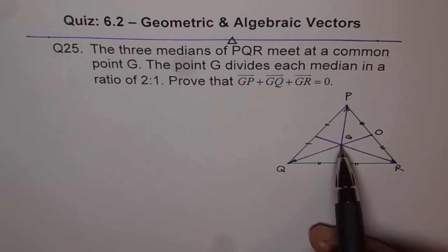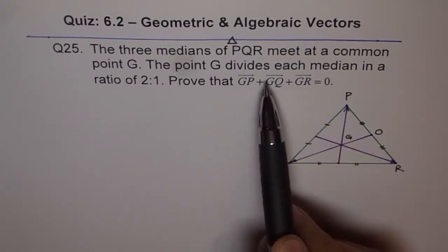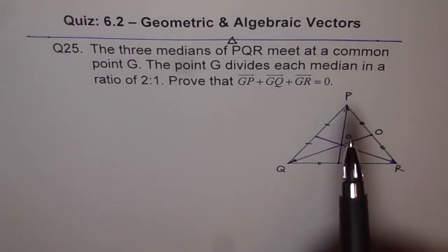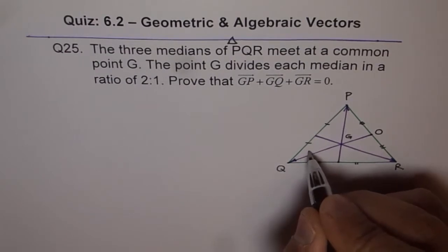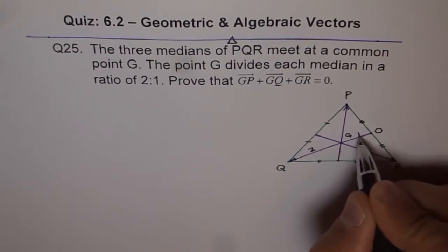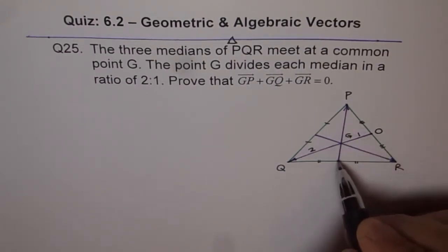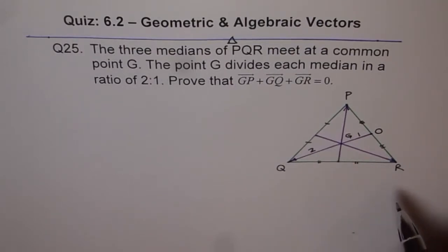Now it says the point G, the centroid, divides each median in the ratio of 2 is to 1. So this is the ratio, 2 is to 1. That is what they mean. 2 is to 1, 2 is to 1. That is the ratio in which the centroid divides.